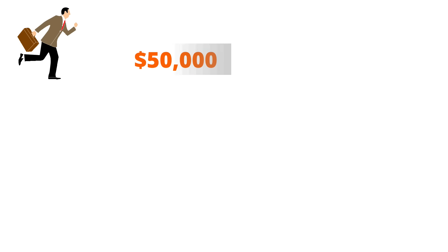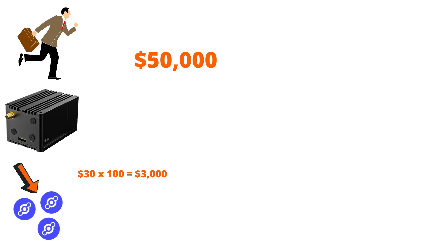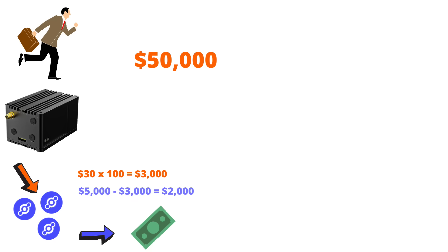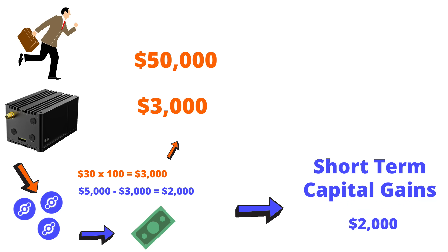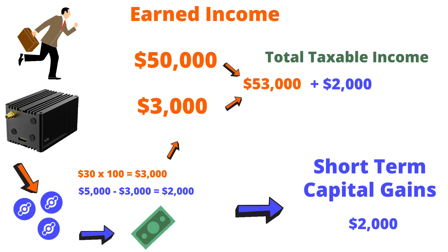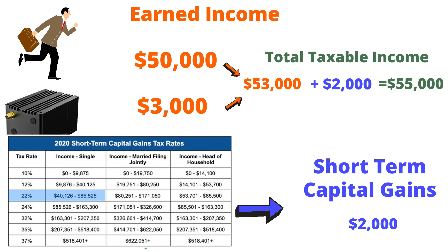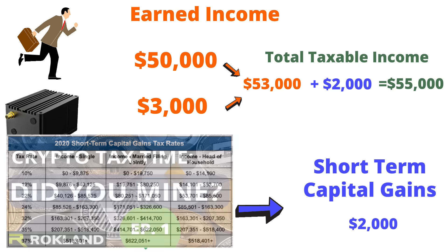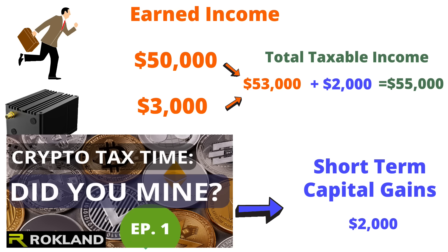Let's look at some examples. Example 1: in this tax year, Jason worked at his day job and made $50,000. In the same year, he also mined 100 HNT coins with an average cost basis of $30 each. Jason then decides to sell his 100 HNT coins at the end of the year for $50 each. He mined a total value of $3,000 and sold for $5,000, thus realizing a short-term capital gain of $2,000. Jason's total earned income includes his day job of $50,000 and the $3,000 worth of mined HNT for a total of $53,000. His total taxable income combines his earned income of $53,000 with his $2,000 short-term capital gains for a grand total of $55,000, putting Jason into the 22% tax bracket. Watch Tax Time Episode 1 to see how Jason would also need to report the $3,000 worth of mined HNT.